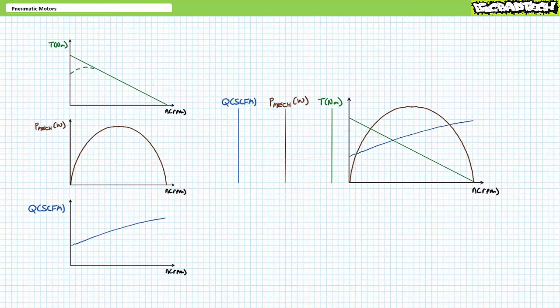You'd think they'd illustrate these properties separately, but they don't. Here I've simultaneously plotted torque T in green, mechanical power in brown, and flow rate Q in blue as a function of rotational speed on the horizontal axis. Yes, it's a little cramped, but given our previous discussion, this chart should be understandable.